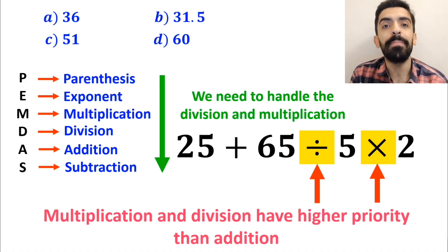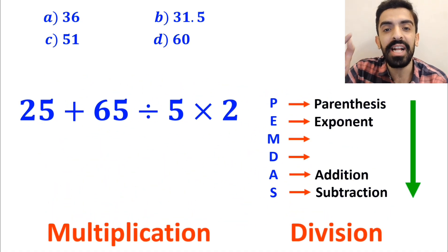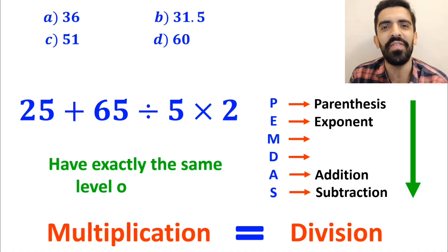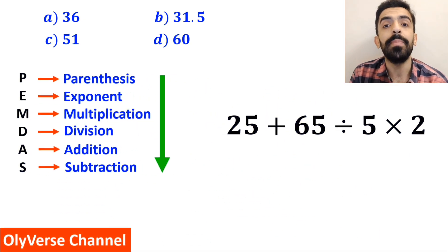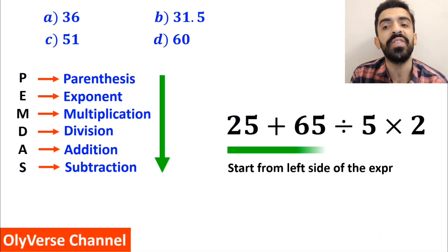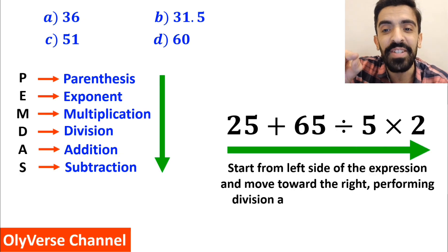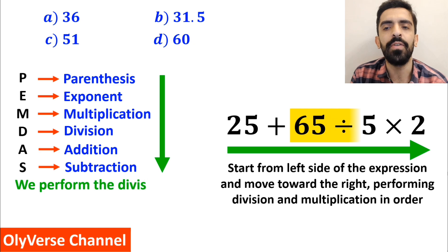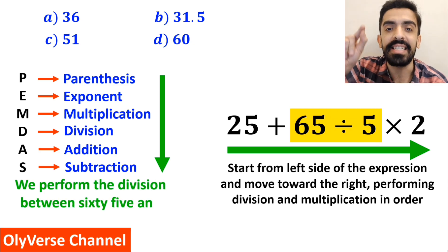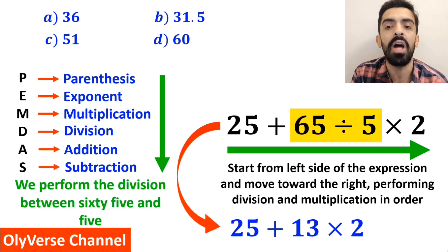It's very important to note that in the PEMDAS rule, multiplication and division have exactly the same level of priority. In this situation the best thing to do is to start from the left side of the expression and move toward the right, performing division and multiplication in order. So first we perform the division between 65 and 5, and this expression simplifies to 25 plus 13 times 2.